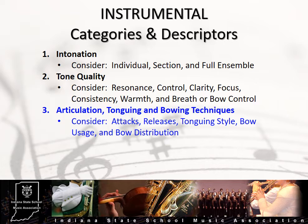Category 3 refers to articulation, and the different types of tonguing and bowing techniques used to produce various styles of articulation found in the performance. Consider such articulations as tenuto, marcato, staccato, legato, accents, and slurs, as well as examples such as pizzicato, detaché, or tremolo, specifically unique to strings. Listen and assess how successfully the students are producing these different articulations, and if they are matching that production from person to person, section to section, and as an ensemble.